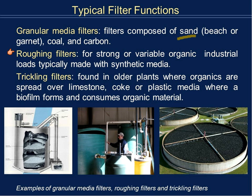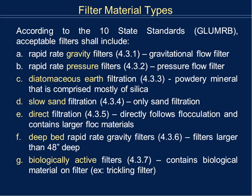Another type of filter is the roughing filter, typically used when you have a strong or variable organic load; you typically use a synthetic media — more like a small plastic, not sand. Last but not least is the trickling filter, typically found in areas where you have a large amount of area available. If you have a lot of real estate, you can have multiple trickling filter tanks. We don't see this often in New York City because real estate is very expensive, but if you go to northern New York State or just out of the state, this is very common, especially for older plants.